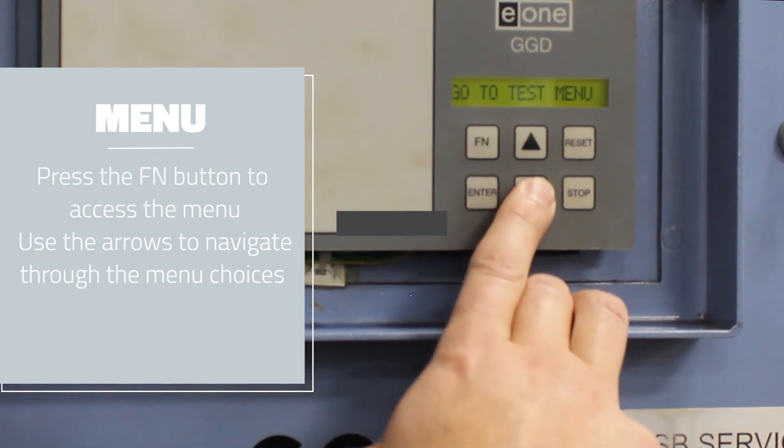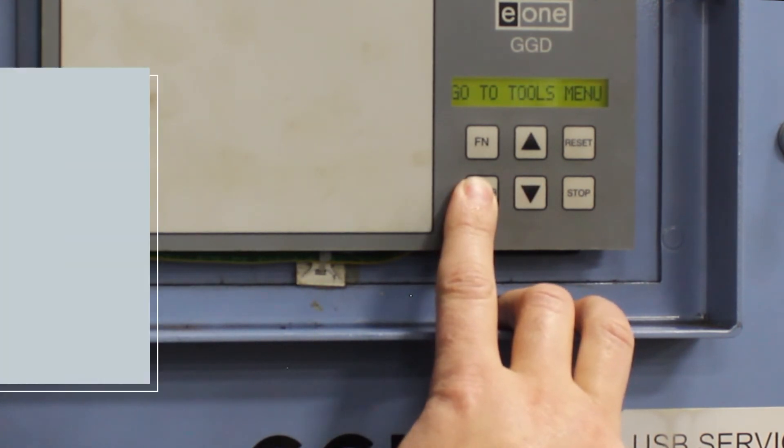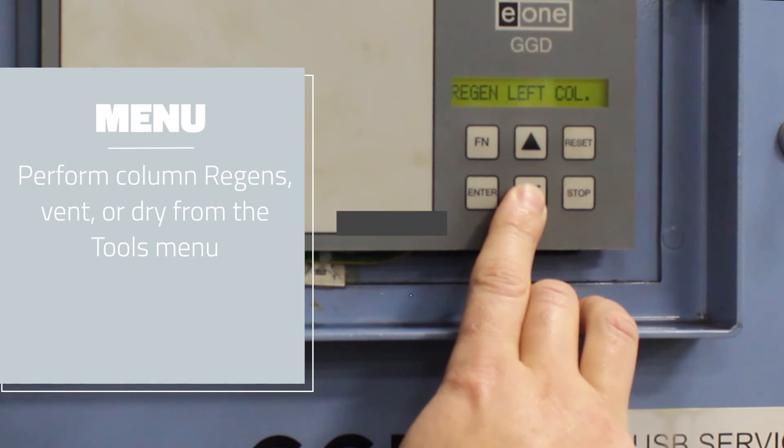Function brings you back out of those menus to the next one, the Tools menu. This is where you can perform the regen of the individual columns, the left column and the right column. You can vent the left column and the right column, dry with the left, and dry with the right.